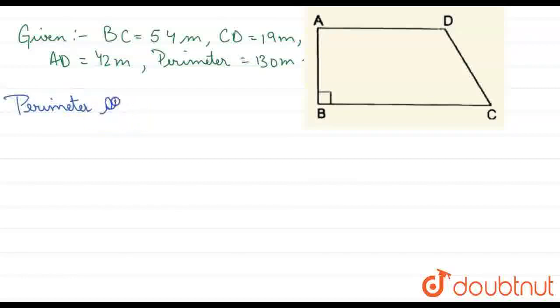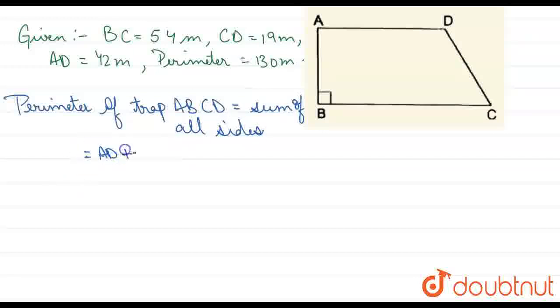Perimeter of trapezium ABCD equals the sum of all sides, which is AD plus DC plus BC plus AB.